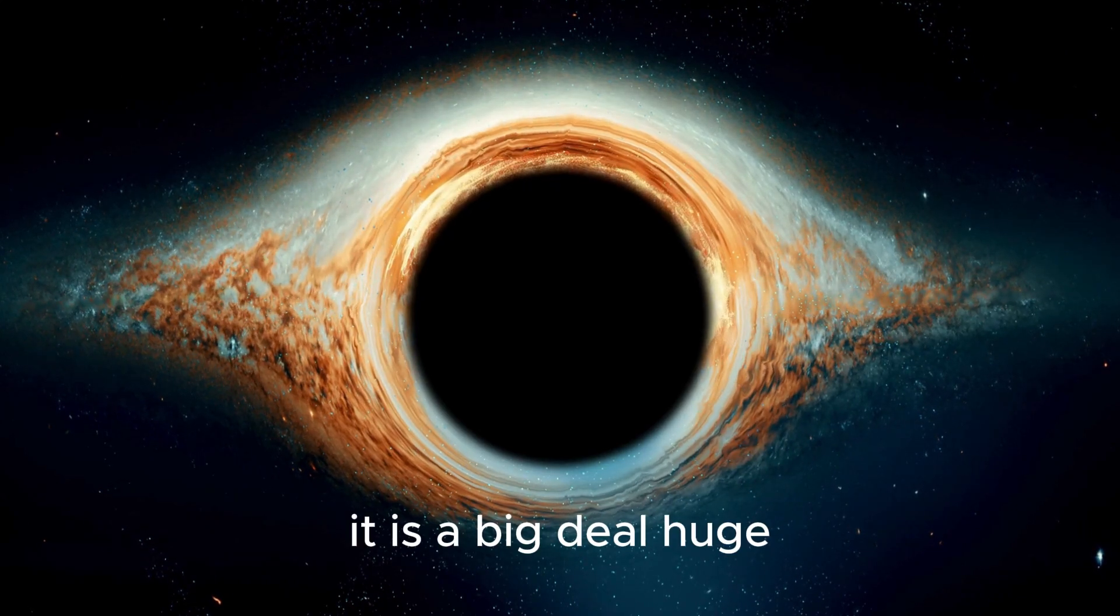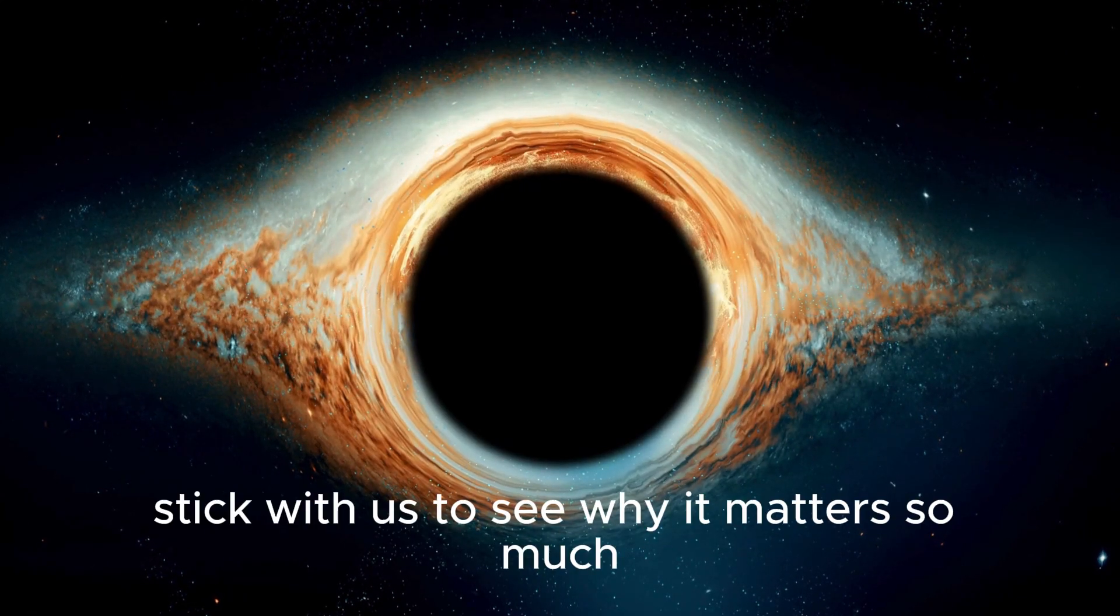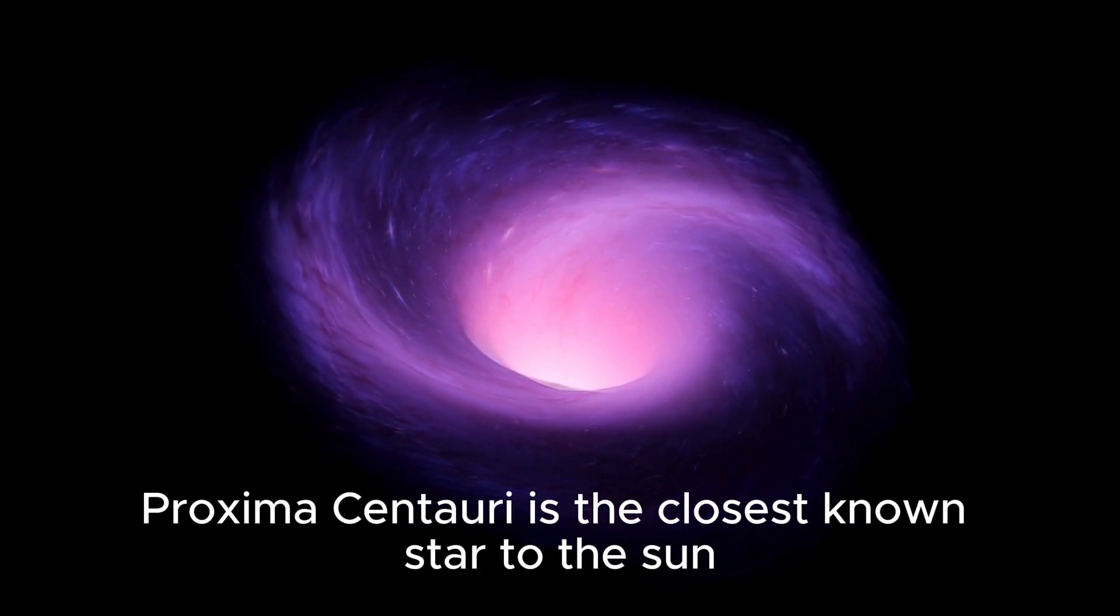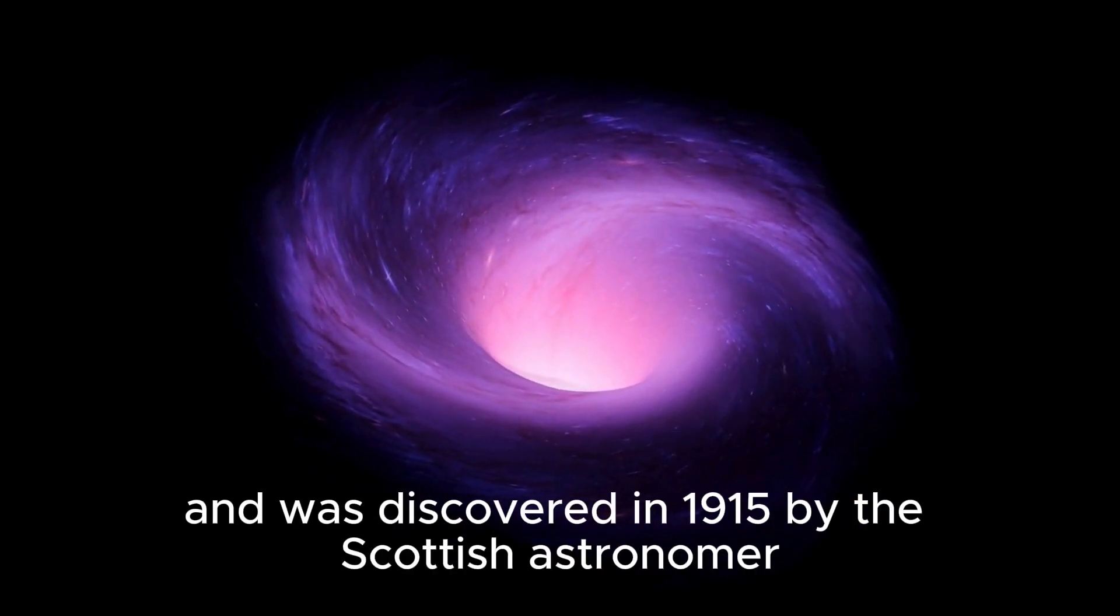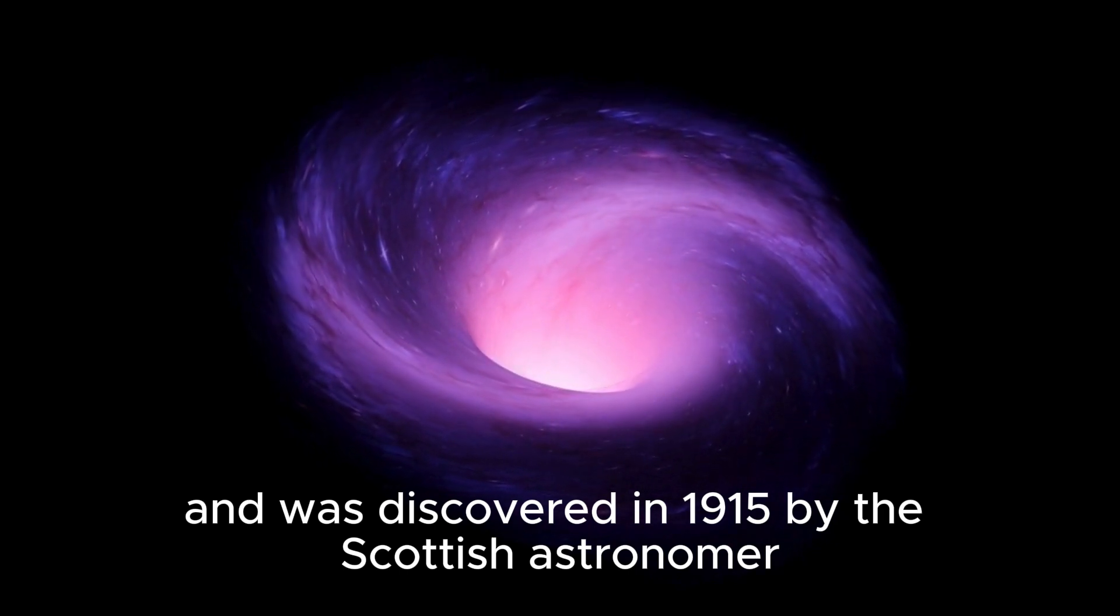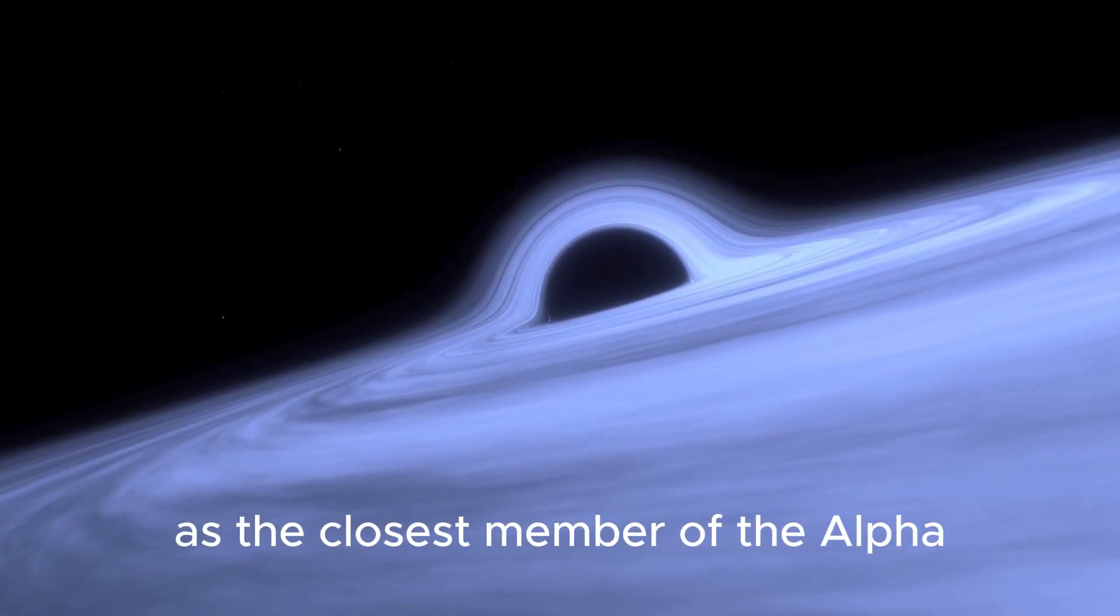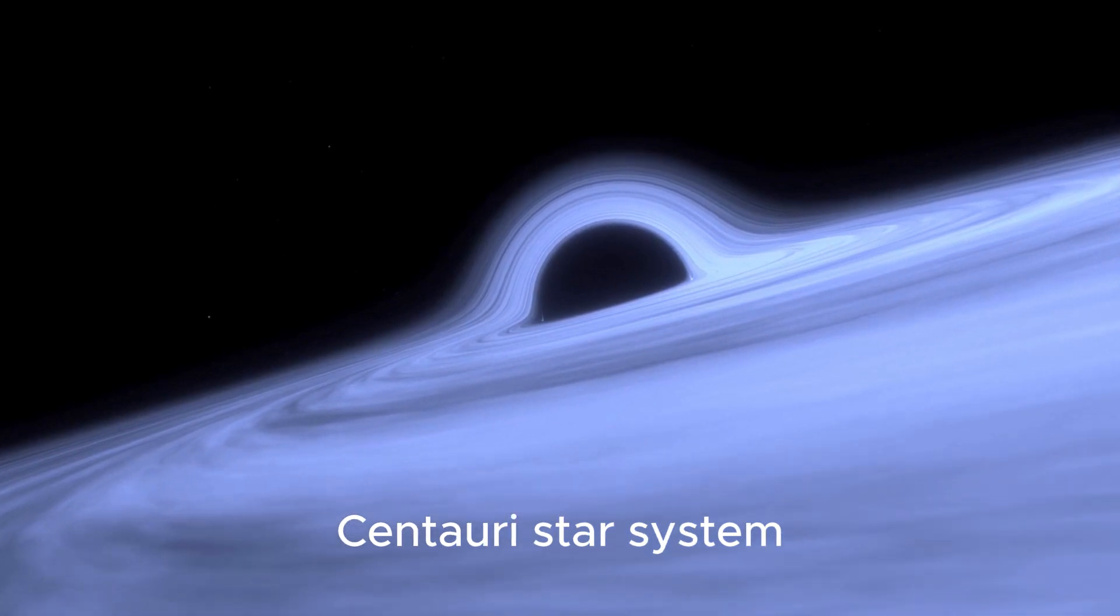It is a big deal, huge. Stick with us to see why it matters so much. Proxima Centauri is the closest known star to the Sun and was discovered in 1915 by the Scottish astronomer Robert Innes. He identified this red dwarf star as the closest member of the Alpha Centauri star system.